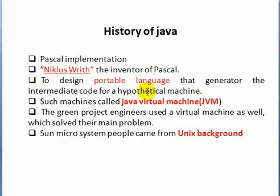So how can we use this intermediate code? They used to use the virtual machine — the Java Virtual Machine. They solved it using Sun Microsystems and used the Unix background. They also used C++.